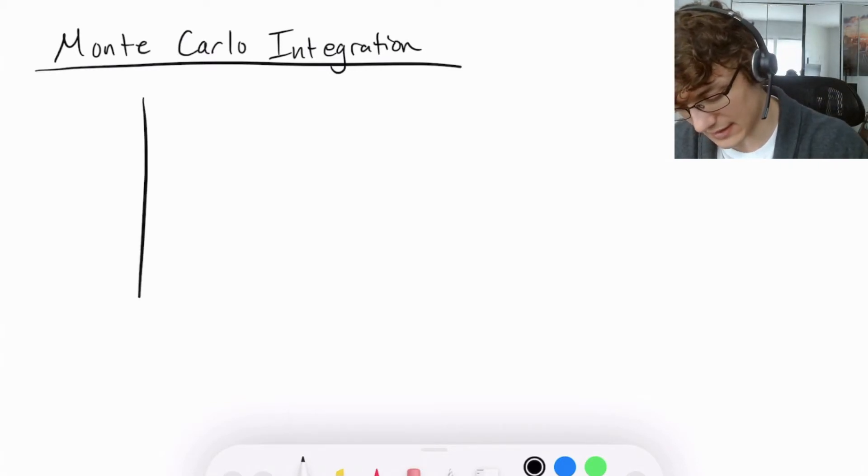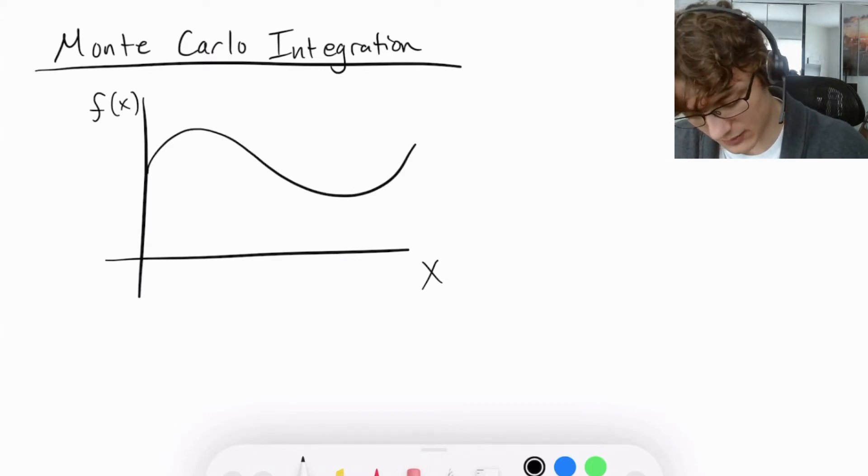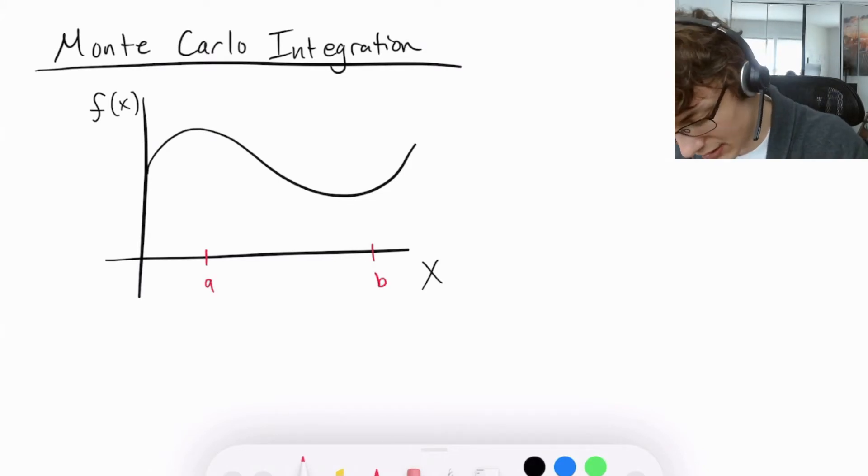So let's go ahead and draw a chart really quickly. We're going to have x and f(x) and we can consider some function that perhaps looks like this and we have two points, let's say a and b, and we want to figure out the area underneath this curve between these two points.